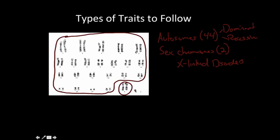As we go through and look at these different pedigree charts, I'm going to show you an example of each — an autosomal dominant, autosomal recessive, and X-linked — and see how we can figure out what each person in the family actually carries. We're going to focus on disorders in this case: autosomal dominant disorders, autosomal recessive disorders, which are on the autosomes, and X-linked disorders.